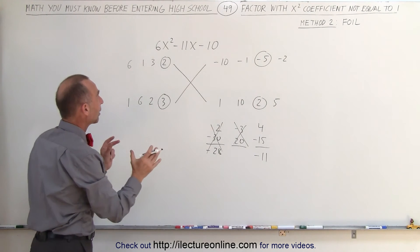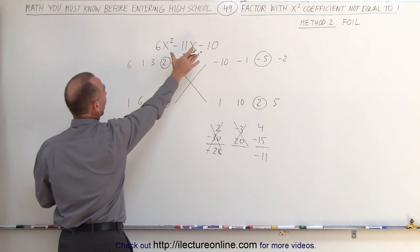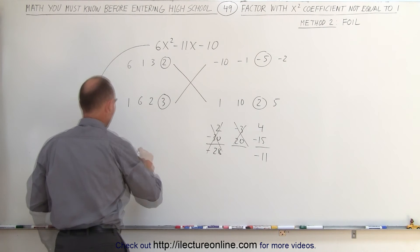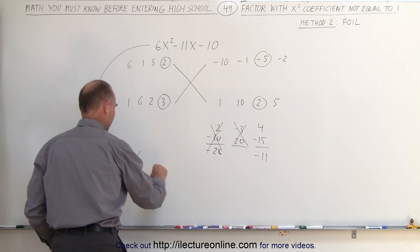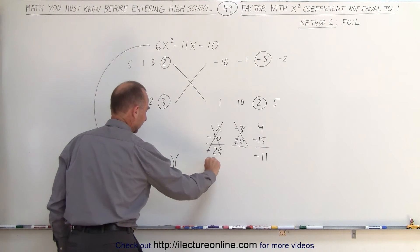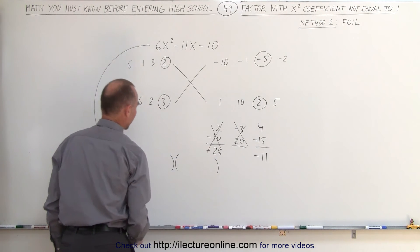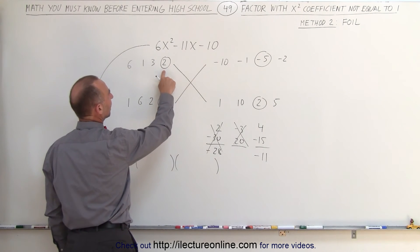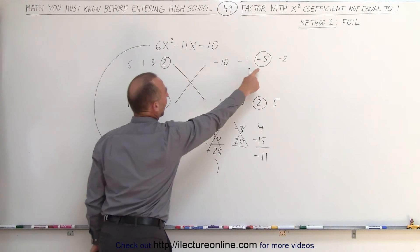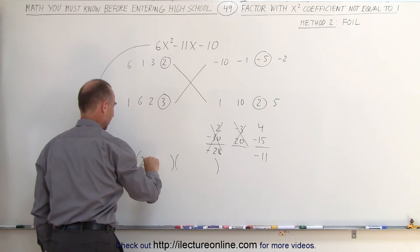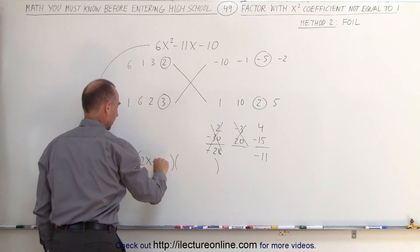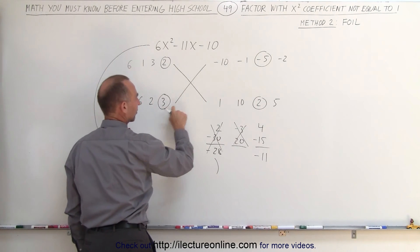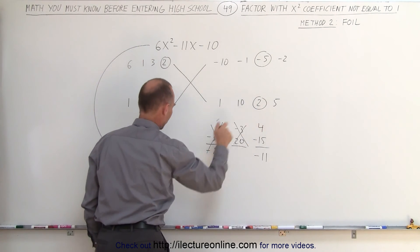Which means I can now go ahead and write this trinomial in factored form. First I draw my parentheses — on the first term I get 2x minus 5, and on the second binomial I get 3x plus 2.